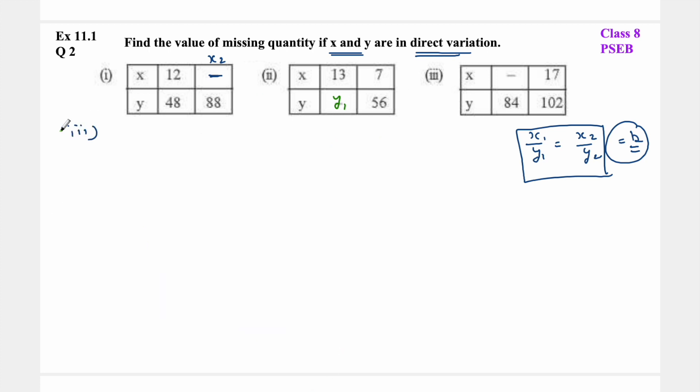For the third part, x1 is missing. So x1 upon y1 equals x2 upon y2 (in direct proportion). x1 upon 84 equals 17 upon 102. Cross multiply: x1 into 102 equals 17 into 84. So x1 equals 17 into 84 upon 102.